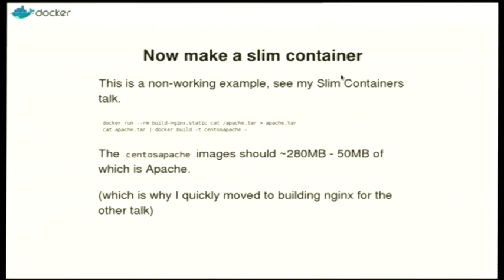We can run this sucker. We make the slim container by extracting just /usr/local/apache2 and building a new container that contains nothing but, in this case, CentOS and the second layer being the tar file of the result. So instead of 1.4 gig, we get a 280 meg container. If I had chosen Debian instead, it would be 120 meg, because the Debian base image is 85 meg. In the slim container talk, Nginx using my cut-down Debian was about 60 meg.